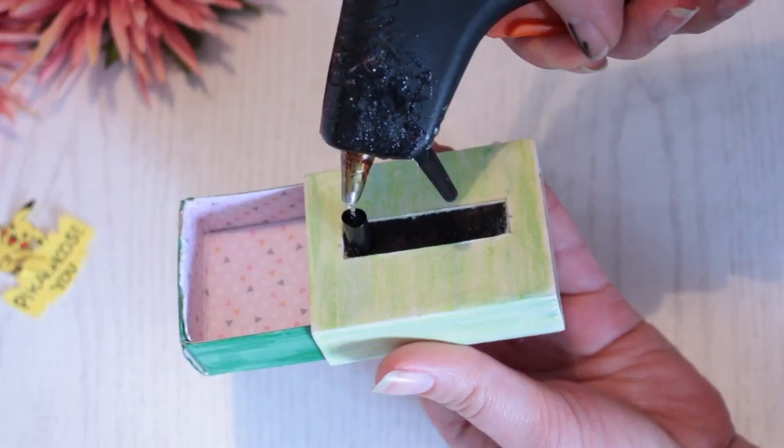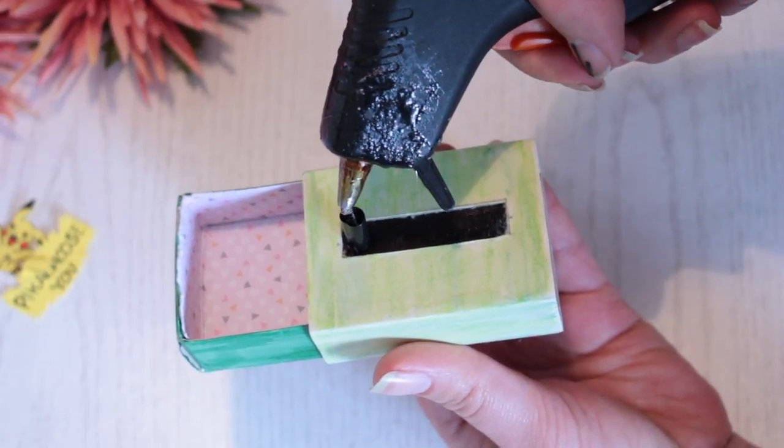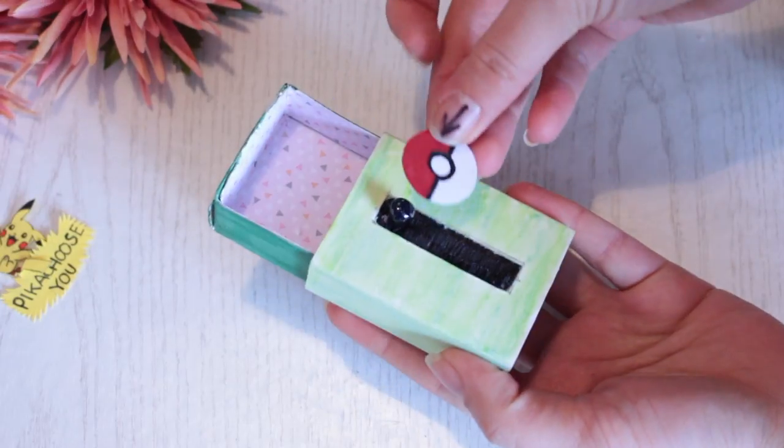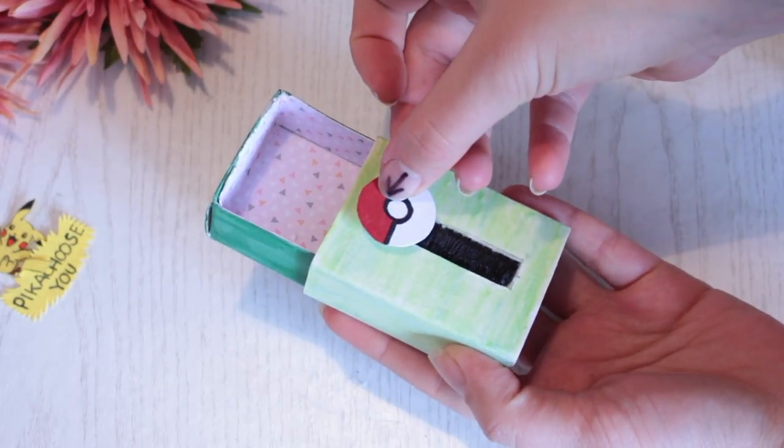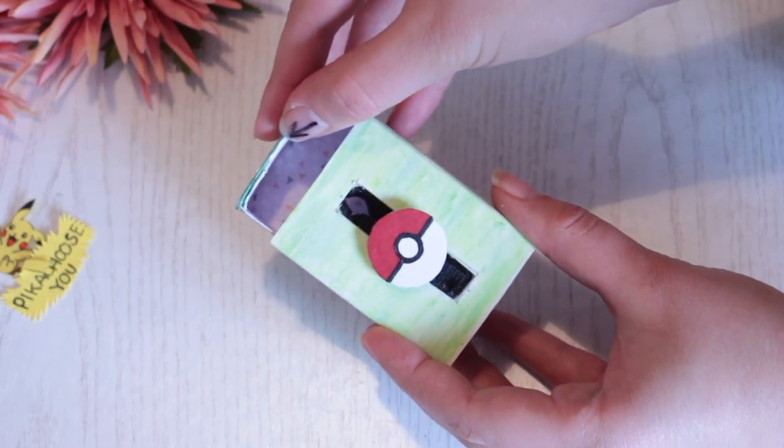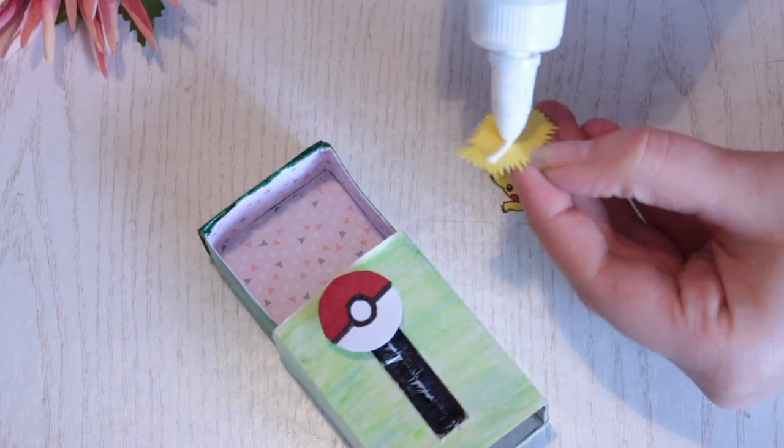To give the straw more stability, put some glue right into it and fill it up completely before adding your button. Press down to make the button stick and then leave the whole thing to dry completely. When it's completely dried, add the final details.